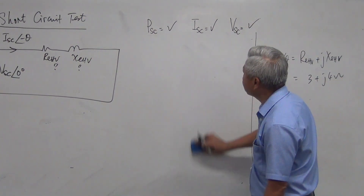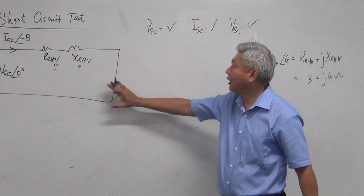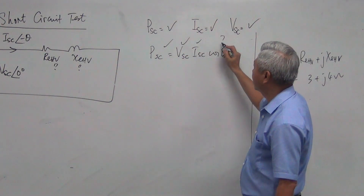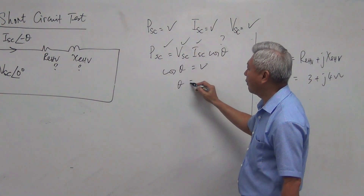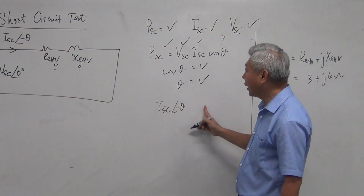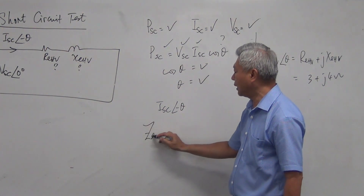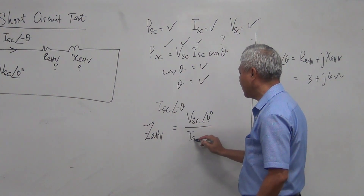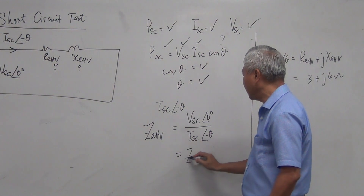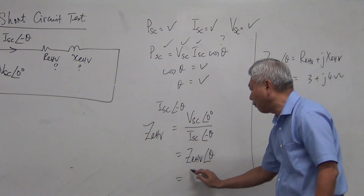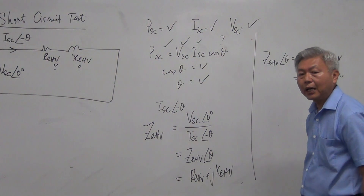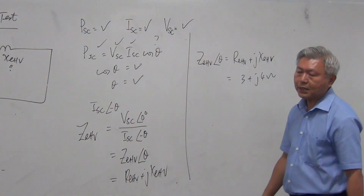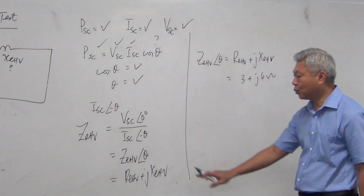Short circuit test: the experiment is done on the high voltage side. The first step is P = V × I × cos θ, so cos θ can be found, then theta can be found. Substitute theta into the current with a minus sign and leave it in polar form. Go straight to find the impedance, which equals VSC at 0° divided by ISC at minus theta. Your impedance is in polar form; then make it into rectangular form and the two parameter values are revealed. These two parameters — REHV and XEHV — are usually small values.